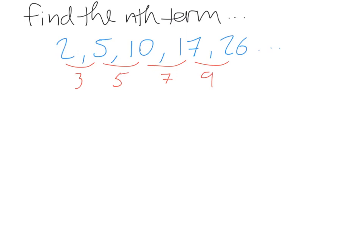So now we're going to look at the second difference. To get from 3 to 5, it's a difference of 2. From 5 to 7, it's a difference of 2. And from 7 to 9, it's a difference of 2. Since the second difference is the same, we know this is definitely a quadratic sequence. And because it's 2 every time, we know that n squared is contained in our sequence.